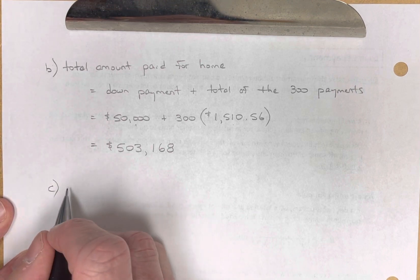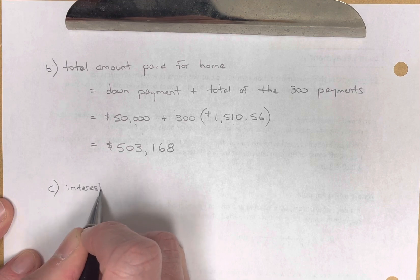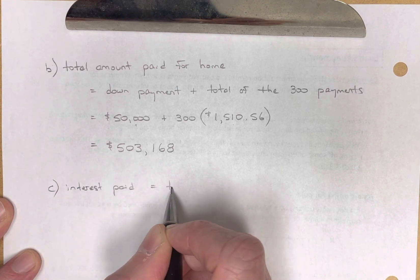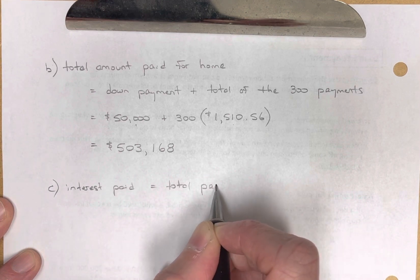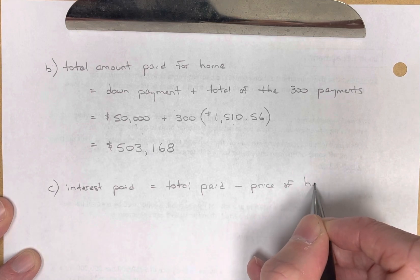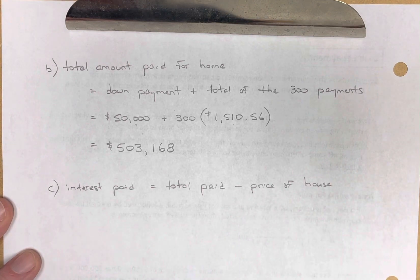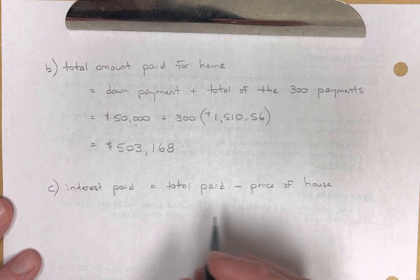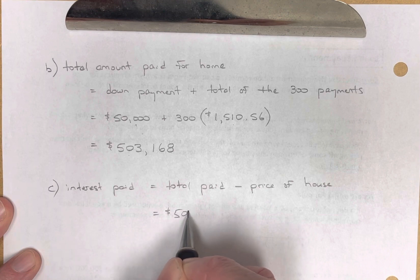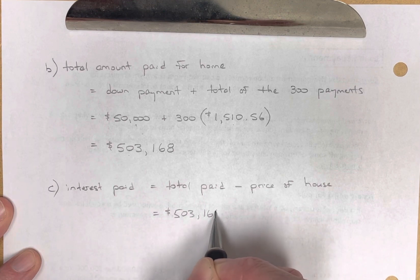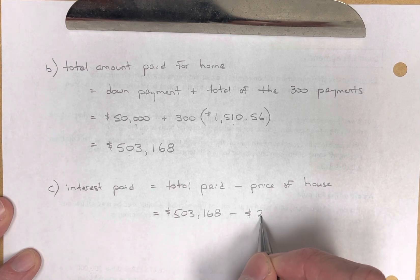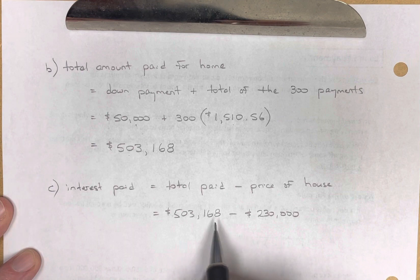Letter C. How much did they pay in interest? Well, interest paid is the total they paid minus the price of the house. If they had bought it in cash, they would have paid no interest, but they borrowed money. Well, the total they paid is right here, $503,168. The price of the house, well, the house was $230,000.